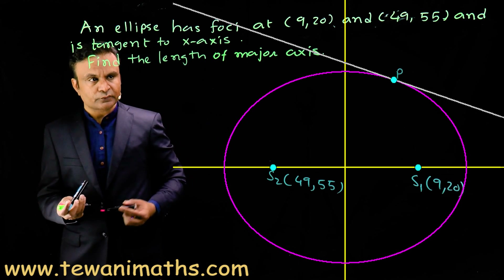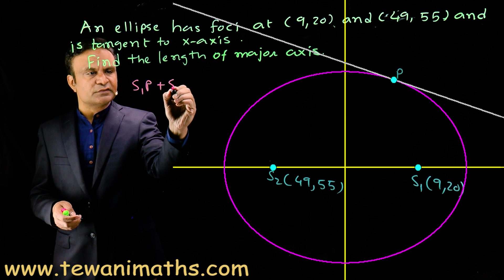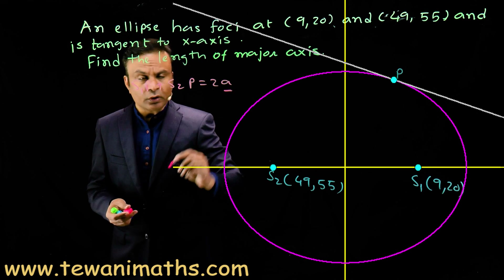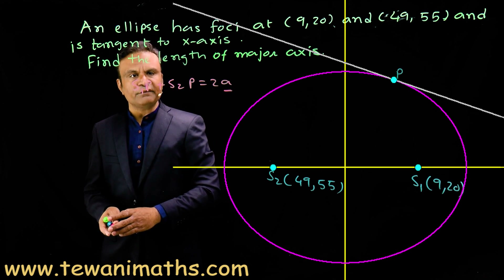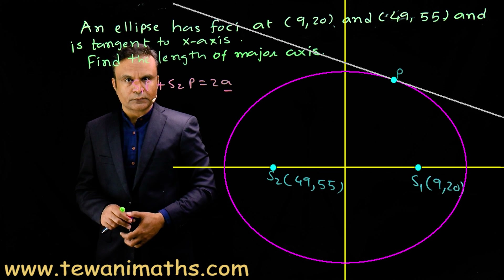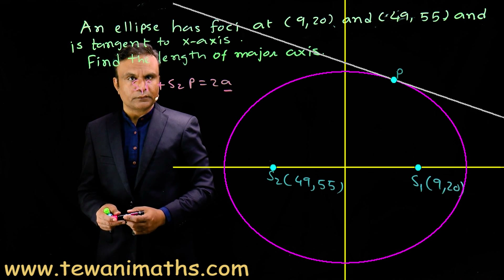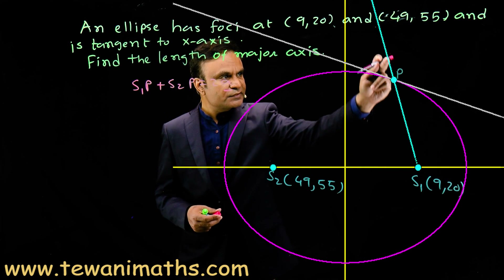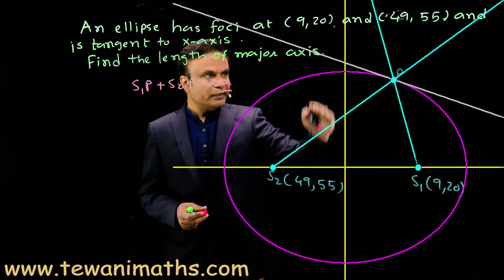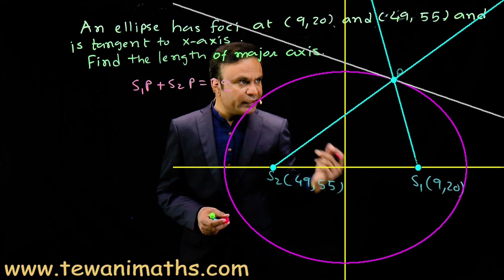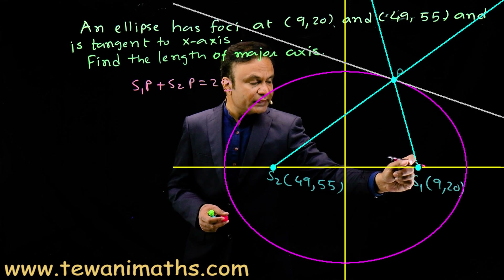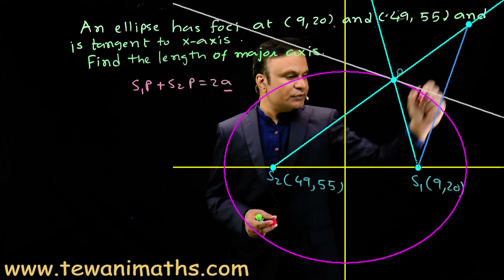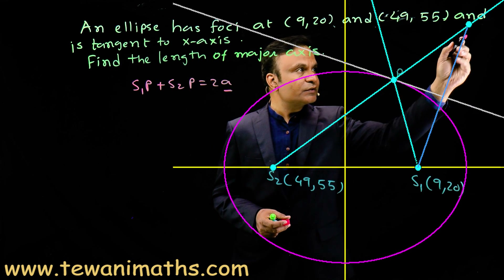We write: S1P + S2P = 2a, where a is the length of the semi-major axis. But we don't have point P, so how do we get this sum? We use the reflection property of the ellipse: if S1P is the incident ray, then S2P is the reflected ray, and here the tangent line is the line mirror. So if I take any point on the incident ray — say point S1 — its image in the line mirror will lie on the reflected ray. Suppose the image of point S1 in this mirror is point Q.